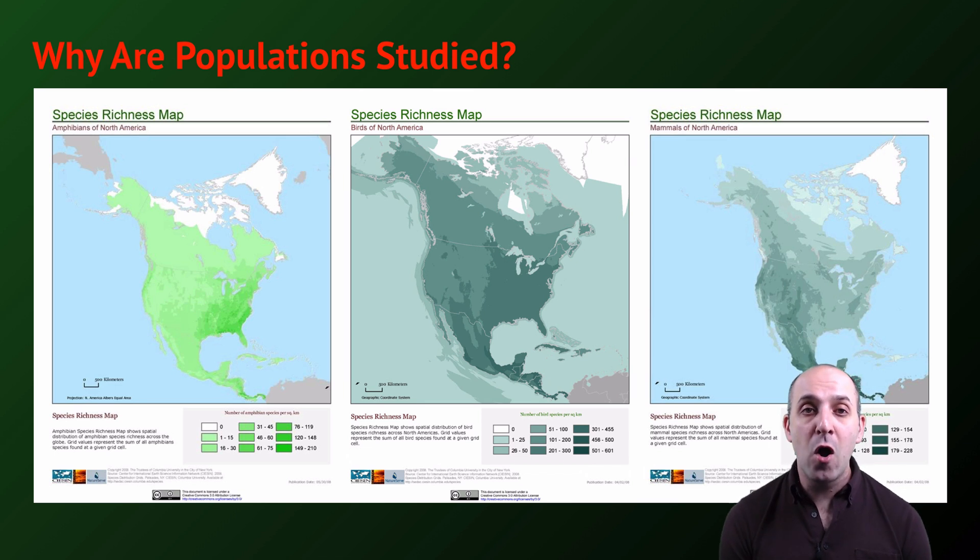The interactions among members of a population and the interactions among populations with other populations are major networks by which the larger functionings of the biosphere are accomplished. So if we're interested in those functionings, and we should be if we like to breathe and eat and drink and live healthy lives, then we absolutely need to understand how the parts of those systems, the populations of individuals, are distributed and how they're interacting.